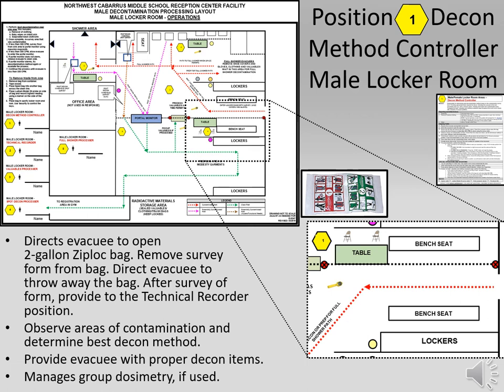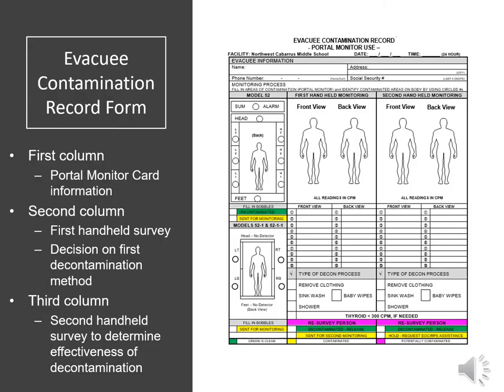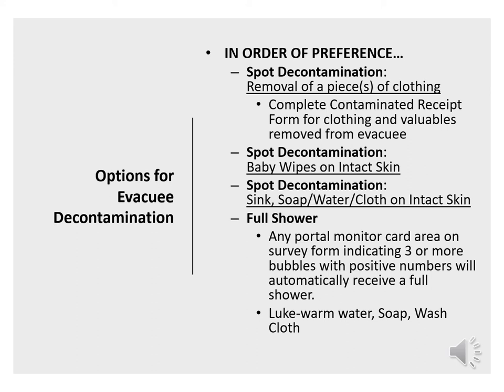The job action sheet guides the decon method controller through the decision-making process. This position operates in a clean area and does not require protective clothing except surgeon's gloves if warranted, and uses group dosimetry for exposure updates. The evacuee contamination record form, brought in the two-gallon Ziploc bag, shows in its first column where the portal monitor found contamination, the second column details the amount and location from the handheld survey meter, and the third column documents post-decontamination survey results. Decontamination options include spot decontamination first — such as removal of clothing or use of a sink or baby wipes — with a full shower as the last option.